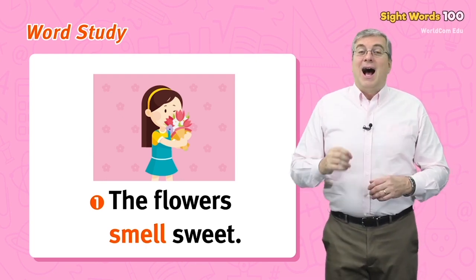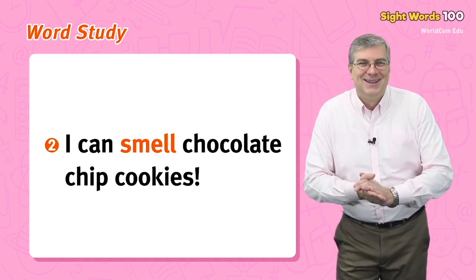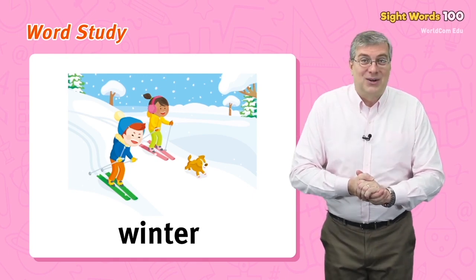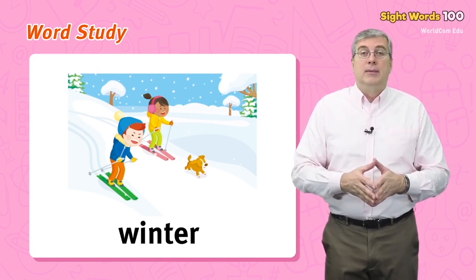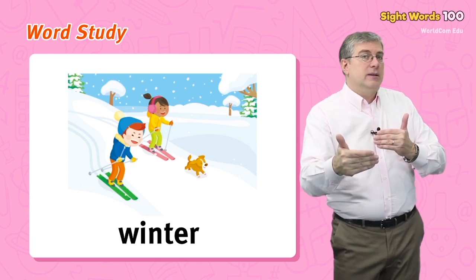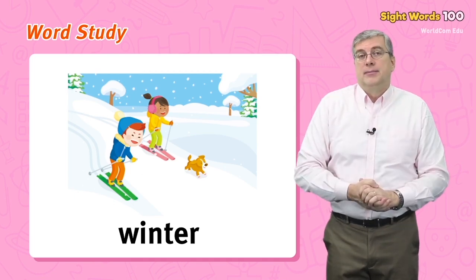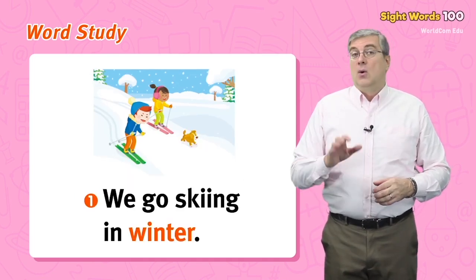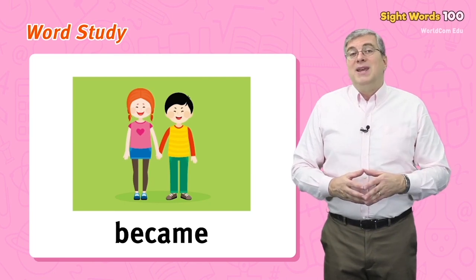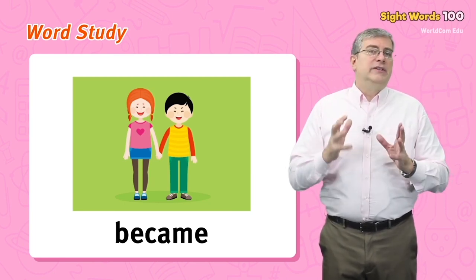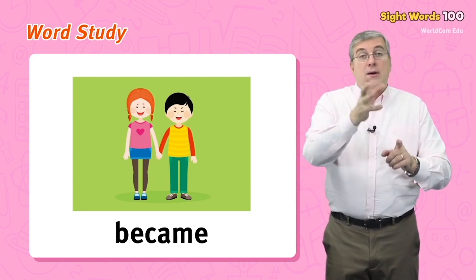Or I can smell chocolate chip cookies. Next we have winter. Winter is a season, just like spring, summer, and autumn, but winter comes at the end of the year — it is the coldest season. For example, we go skiing in winter, or it snows during winter.